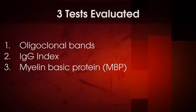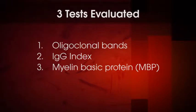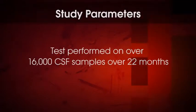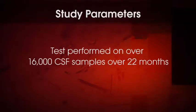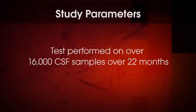To address this concern, we performed a study that sought to determine the clinical usefulness of MBP testing. We evaluated the results of three tests — oligoclonal bands, IgG index, and MBP — performed on over 16,000 CSF samples sent to ARUP over a 22-month period. All included specimens were stratified into one of two groups: either an MS status known or an MS status unknown group. Medical chart review was used to determine the MS status in the MS status known group.